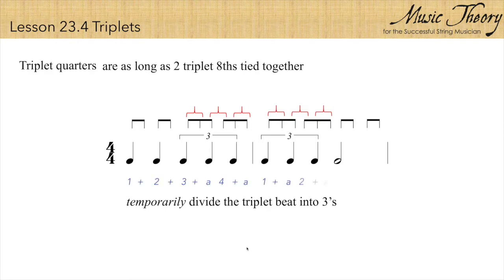To count this, we would count one and two and three and a four and a one and a two and a three and four and. And you'll notice that the quarter notes fall directly over certain syllables. Three and a four and a one and a two and a.